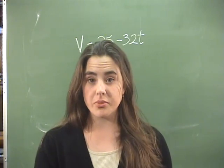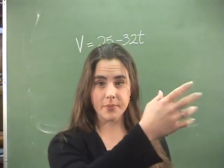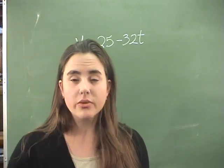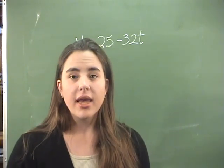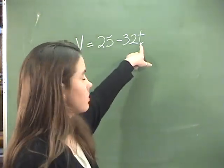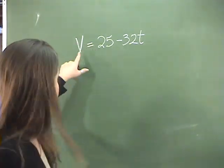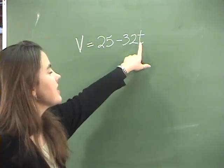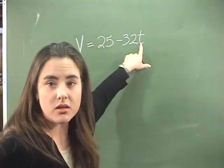If we know that somebody took the shot put and threw it, we can calculate using this formula how fast it was going at different times if we plug in the different times. For this equation, the V represents velocity or how fast it's going, and the T talks about the time.